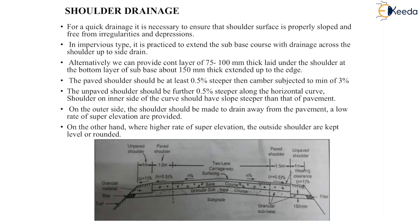Where a high rate of super elevation is provided, the outside shoulders are kept level or rounded. Generally, the slope of the shoulder is 0.5 percent more than the slope of the carriageway, subjected to a minimum of 3 percent, so as to drain off the water effectively.